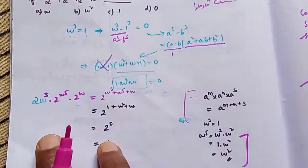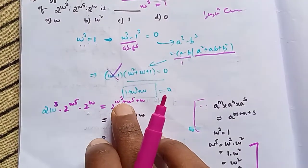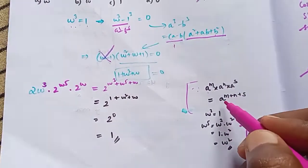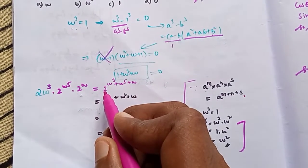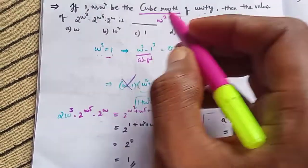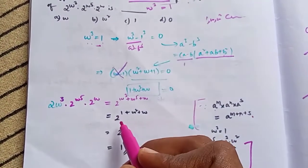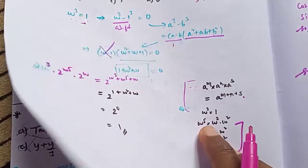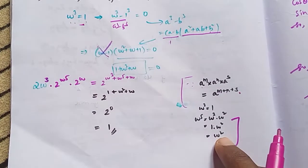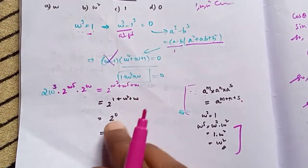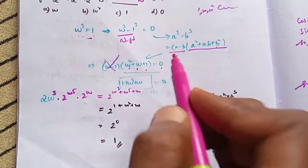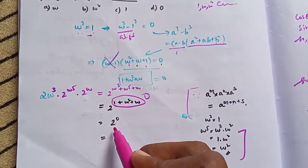We need to find 2ω³ + 2ω^5 + 2ω. Using the exponent rule, ω^5 = ω³ · ω² = 1 · ω² = ω². So the expression becomes 2(ω³ + ω² + ω) = 2·1 + 2(ω² + ω). Since ω² + ω + 1 = 0, we have ω² + ω = -1. So 2·1 + 2·(-1) = 0, and 2^0 = 1. The answer is 1.